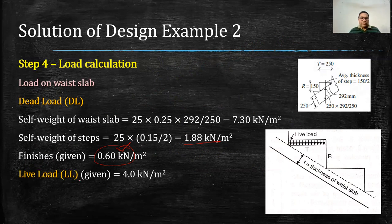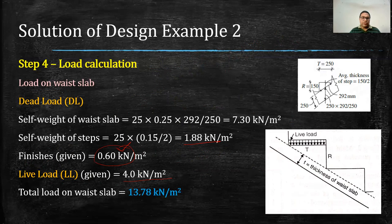In the case of live load, it is also given as 4 kN/m², so I am taking this as it is. Now totalling the load, the load on the stair slab or on the flight is 13.78 kN/m². That is the total load on the waist slab.